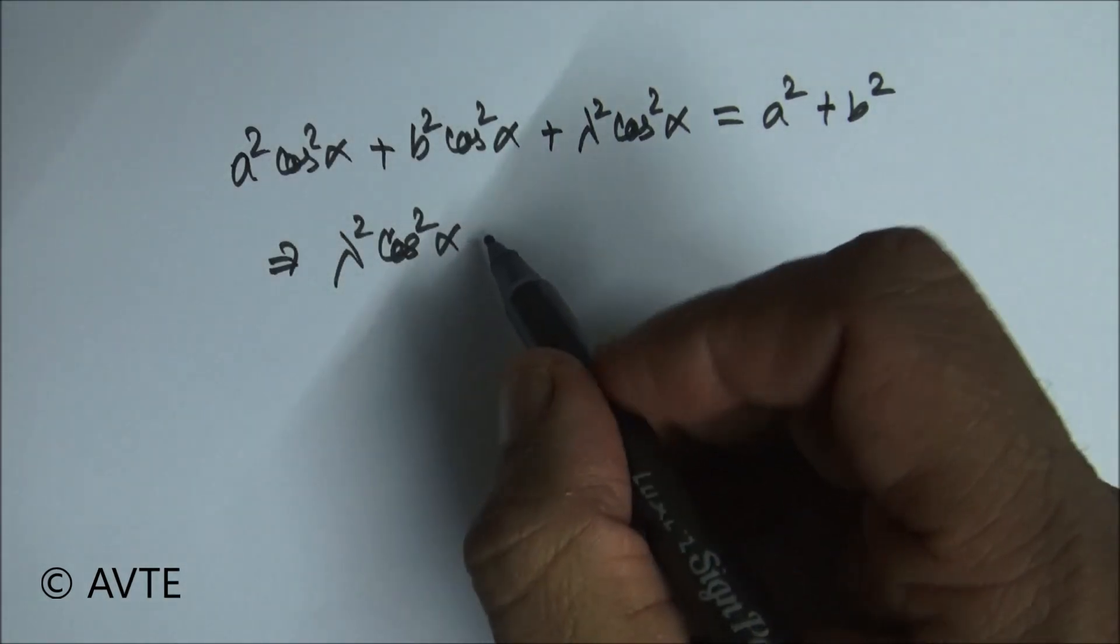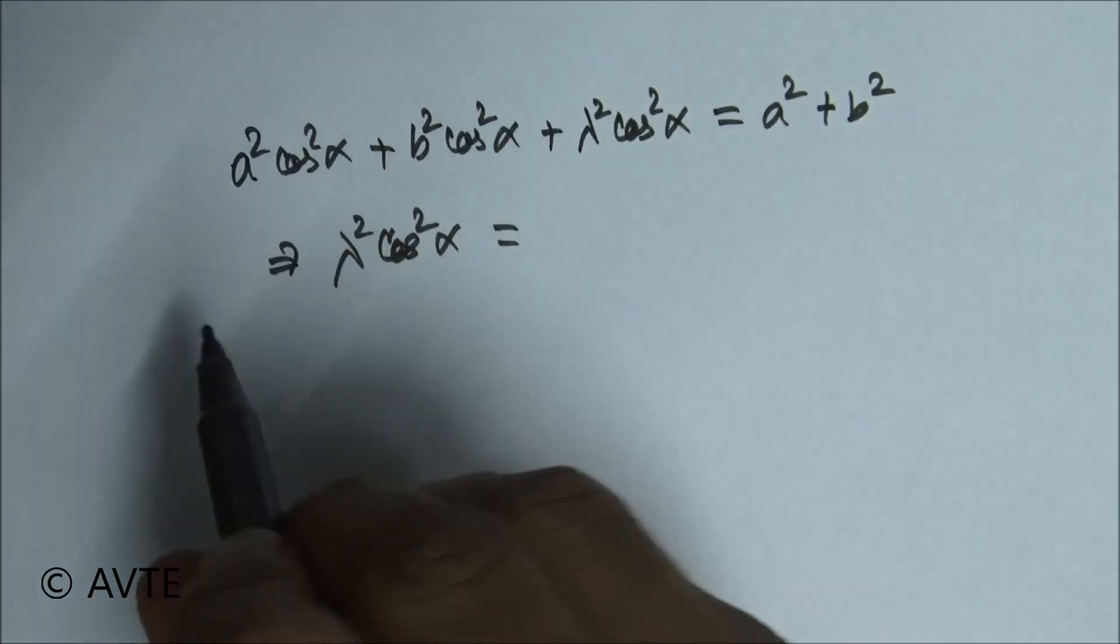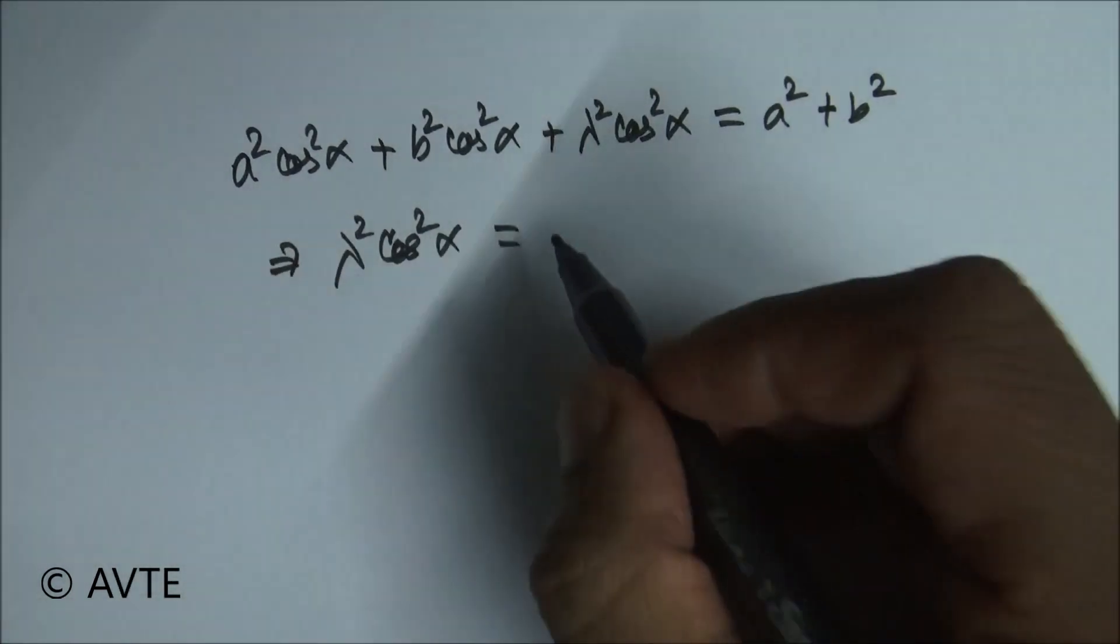Cancel and we can cross multiply, cancel and open it up, opening it up, keeping lambda square cos square alpha on one side and transforming the other terms to the right-hand side, we get